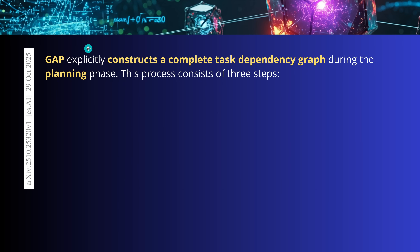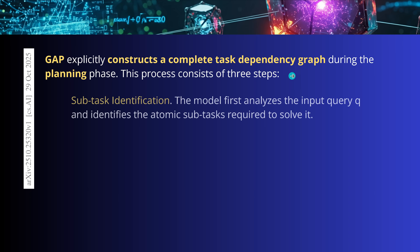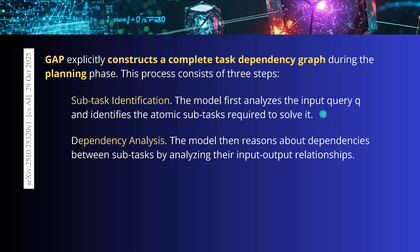The really interesting thing is how the system constructs a complete task dependency graph during the planning phase. The authors tried three different steps. First, subtask identification: GPT-4-Omni analyzes the input query and identifies how many atomic subtasks can be built from it, and how many subtasks are required to solve it. Then GPT-4-Omni reasons about the dependencies between those subtasks by analyzing the input-output relationship — though remember, this model was rather limited in complex reasoning ability.